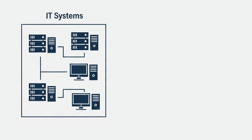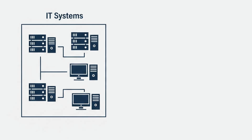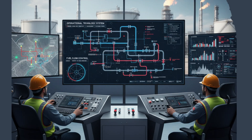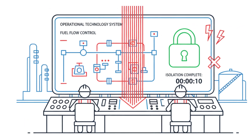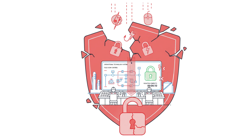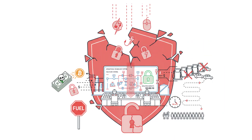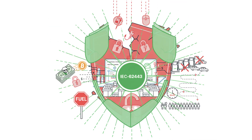The hackers didn't just target IT systems — they also breached operational technology (OT) systems, which control the physical flow of fuel. While the OT systems were quickly isolated, the attack exposed how vulnerable critical infrastructure is to cyber threats. This incident cost Colonial Pipeline $4.4 million in ransom and caused widespread disruption, but it also underscored the importance of standards like IEC 62443, which provide a framework for securing OT systems.